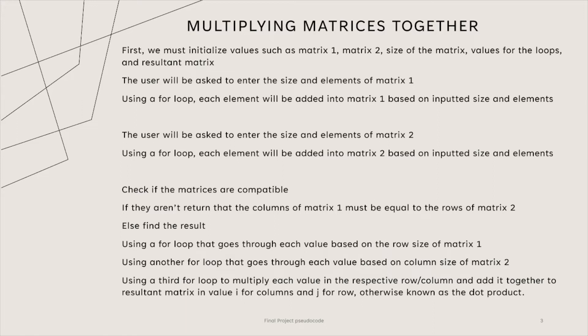Otherwise we will multiply the matrices together. This will be done by using three loops inside of each other. The first loop will go through each value dependent on the size of the rows of the first matrix. A third loop, dependent on the rows of the second matrix, will be used to multiply each value in the respective row or column and add it together to a resultant matrix, with value i for columns and j for rows. This is also known as a dot product. Once this is done, we will print out our resultant matrix.